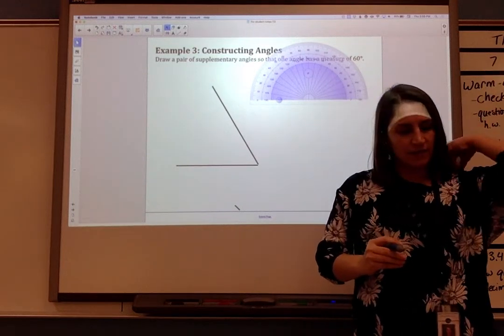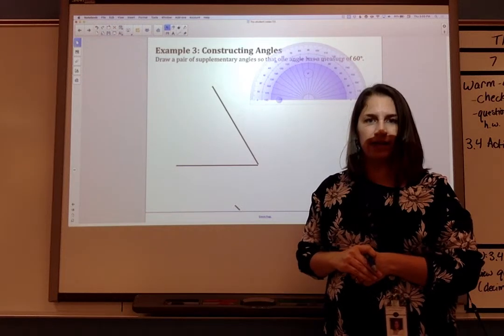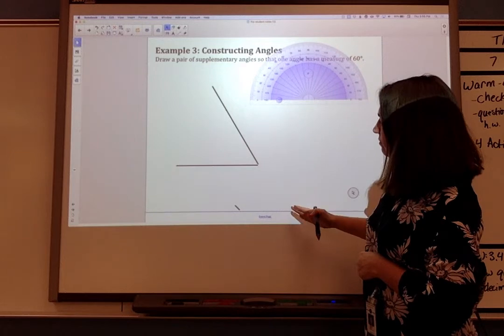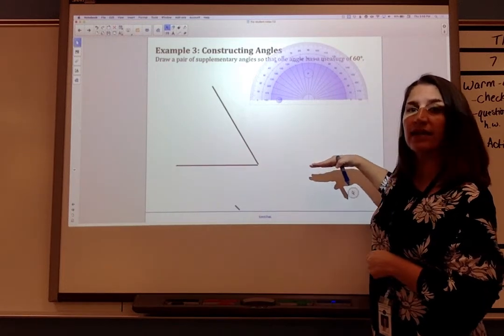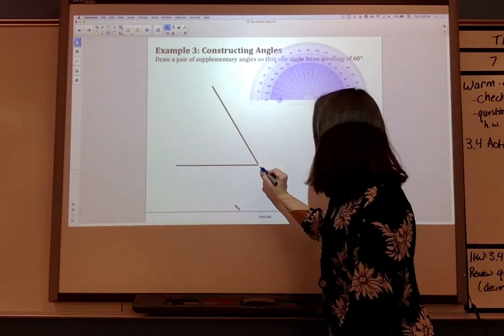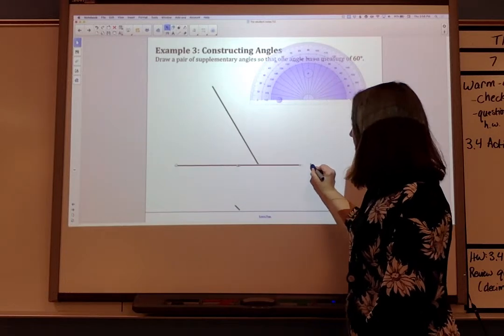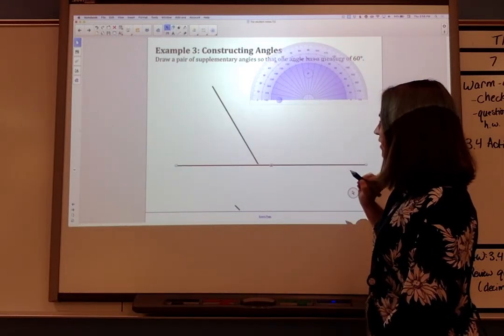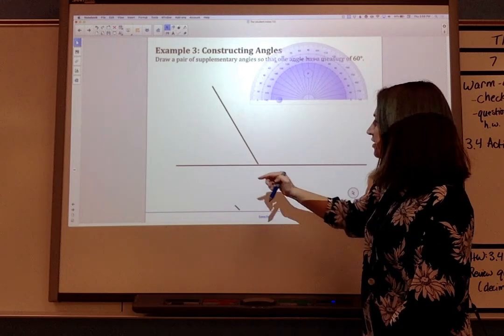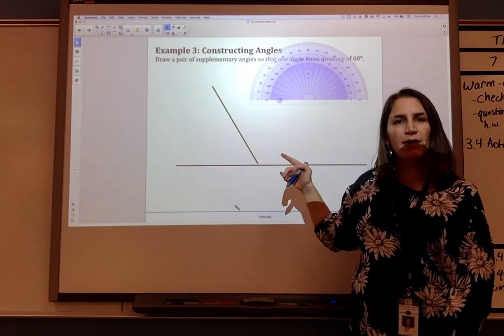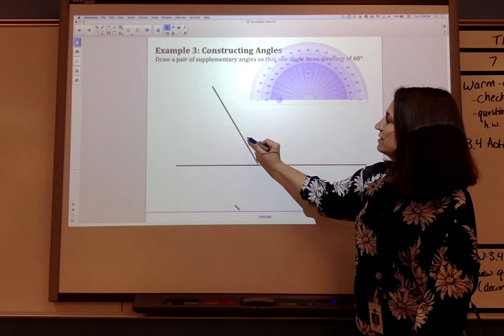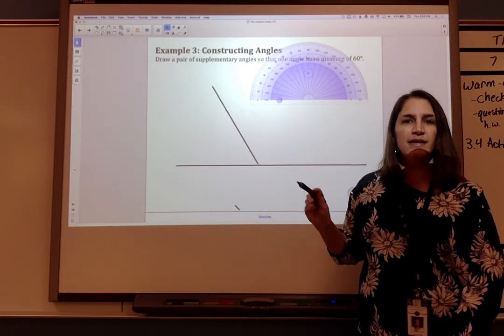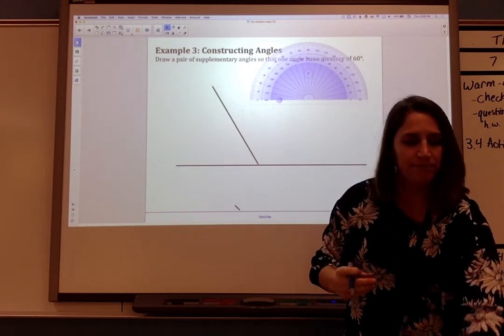And then step two is to extend one of the sides to form a line. So I could extend this line down or this line over. So I'm going to go ahead and extend this line over since that's where I have the space. You're going to use your straight edge to extend the line. I'm just showing how to extend it on the technology here. So here we have a pair of supplementary angles, 60-degree angle, and then this one would have to be 120 degrees so that they add to 180.